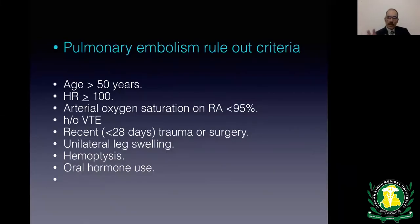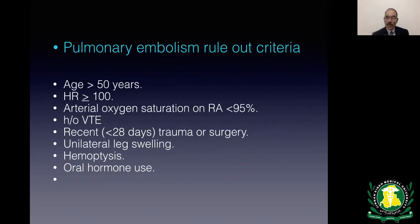For patients with very low pre-test probability, the pulmonary embolism rule-out criteria (PERC) can be applied without needing a D-dimer. If all eight criteria are absent — age under 50, heart rate under 100, O2 saturation ≥95%, no prior DVT or PE, no surgery in the past four weeks, no unilateral leg swelling, no hemoptysis, and no oral contraceptive use — then PE is essentially ruled out.